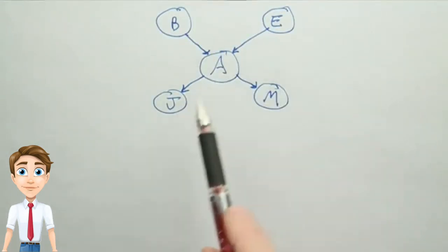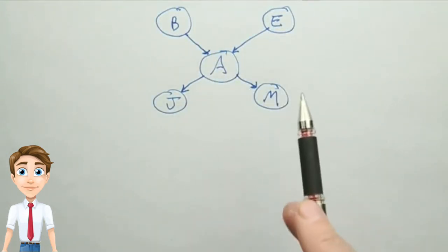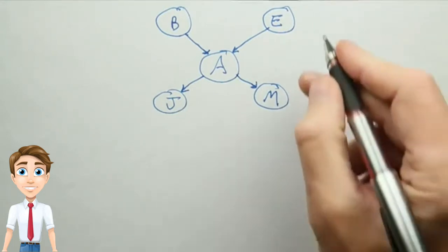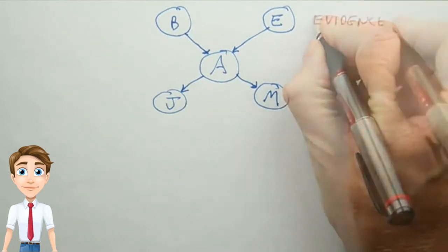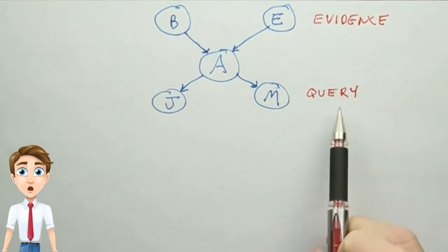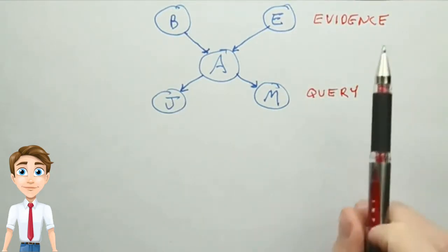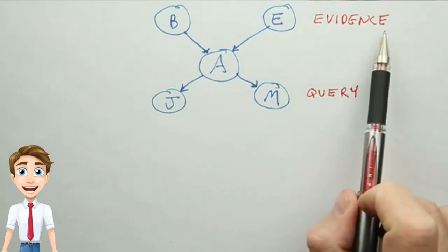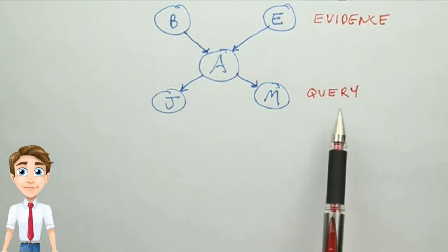Rather than call them input and output variables, in probabilistic inference we'll call them evidence and query variables. That is, the variables that we know the values of are the evidence, and the ones that we want to find out the values of are the query variables.